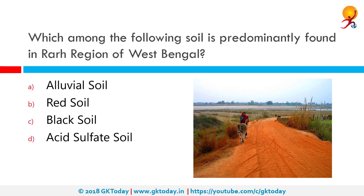Which among the following soils is predominantly found in the Rar region of West Bengal? Rar is the region that intervenes between the Rajabhumi and the Ganges delta, covering parts of the districts of Murshidabad, Birbhum, Pakur, Purba Bardhaman, Paschim Bardhaman, Purba Medinipur, and Paschim Medinipur. The region is above 50 to 100 meters in elevation and is covered predominantly in red soil.